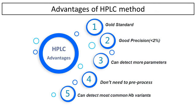High performance liquid chromatography, or HPLC, is the gold standard method for hemoglobin A1c testing. HPLC is an analytical chemistry technique used to separate, identify, and quantify each component in a mixture. Advantages of the HPLC method in HbA1c testing include: it is the gold standard method, has good precision, can detect more parameters, does not require pre-processing like centrifugation, and can detect the most common Hb variants in a blood sample.